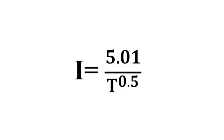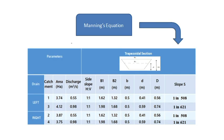Using this equation, rainfall intensities can be found for any region in Ernakulam district. After calculating the design discharge, the slope was found from Manning's equation. With certain assumptions derived from IRC SP50 2013, the slope for drains in catchments 1, 2, 3, and 4 were found.